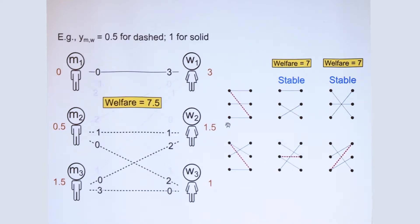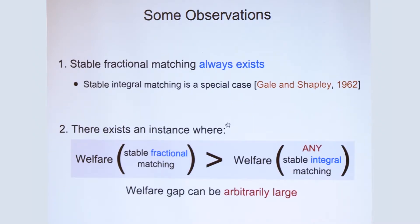However, the matching that I showed you earlier, which was stable, has a welfare of 7.5, which is more than the welfare of any of these two integral stable matchings. And it's easy to see that you can actually make this welfare gap arbitrarily large just by making copies of this instance.